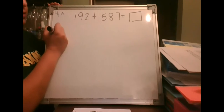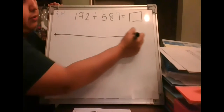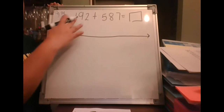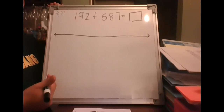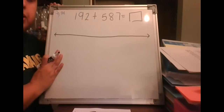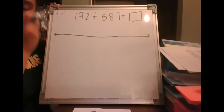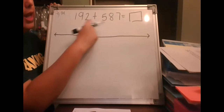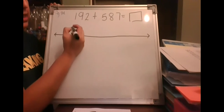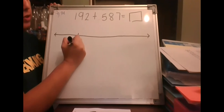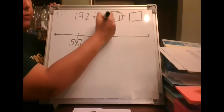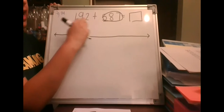Let's do the number line first. Some of you had a harder time with the number line, and that's okay. You can always go back and use a picture, the algorithm, or any of the other methods you know. When we add, we start with the biggest number because that's the easiest, so we're going to start with 587 and add 100.